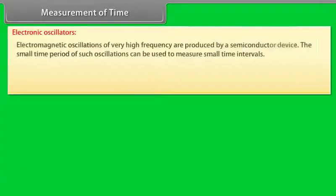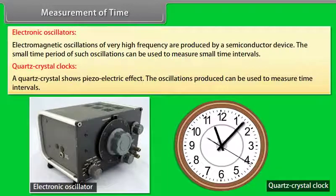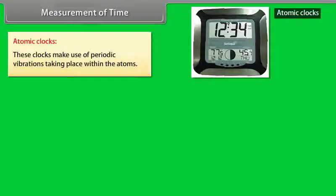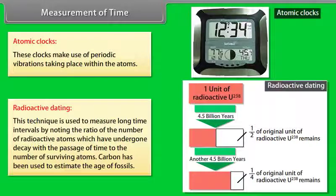Electronic oscillators: Electromagnetic oscillations of very high frequency are produced by a semiconductor device. The small time period of such oscillations can be used to measure small time intervals. Quartz crystal clocks: A quartz crystal shows piezoelectric effect. The oscillations produced can be used to measure time intervals. Atomic clocks: These clocks make use of periodic vibrations taking place within the atoms. Radioactive dating: This technique is used to measure long time intervals by noting the ratio of the number of radioactive atoms which have undergone decay with the passage of time to the number of surviving atoms. Carbon has been used to estimate the age of fossils.